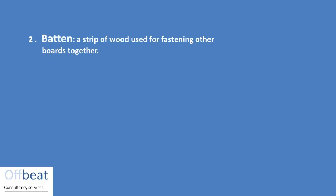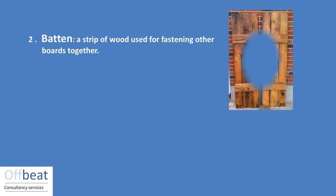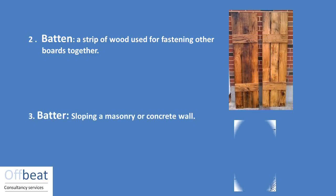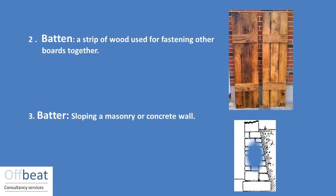Second is a batten. Any wood which is used for tying the other boards together is known as batten. Third is batter: any masonry or concrete wall which is not straight is known as a batter.